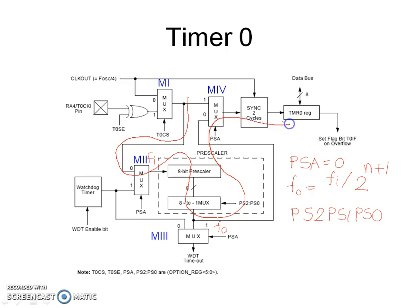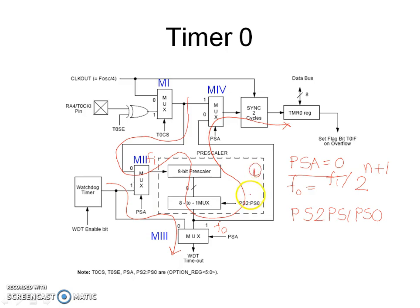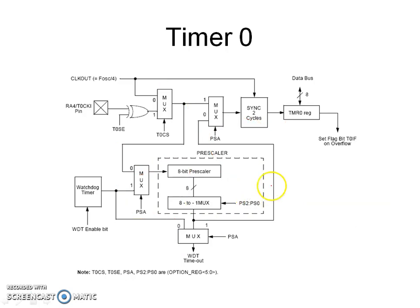With PSA equal to 0, the output of M1 passes through M2, the prescalar block, M3, the synchronization block, and then it increments the count in the TMR0 register. The output of the watchdog timer passes through M3 and controls the T0 bit. So when PSA is 0, the prescalar block is assigned to Timer 0.